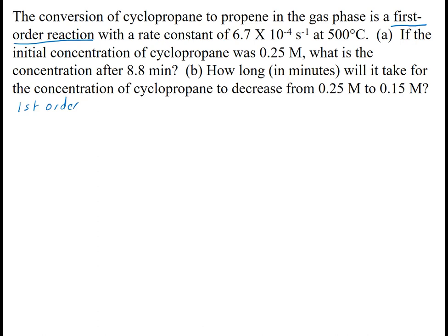The rate constant, which is shown by k, is 6.7 times 10 to the negative 4th per second, which is the same thing as seconds to the negative 1, or 1 divided by seconds. Those all mean the same thing. The temperature is 500 degrees Celsius. Every one of these is going to have a temperature because k is temperature dependent.